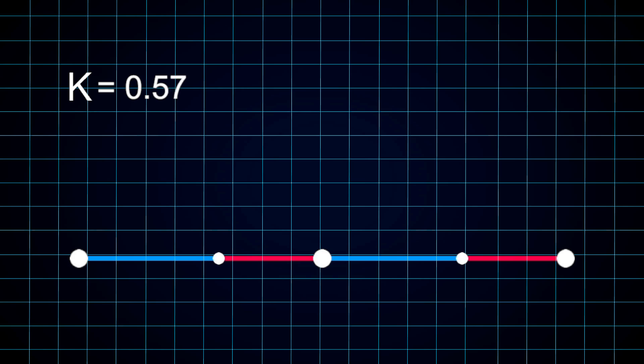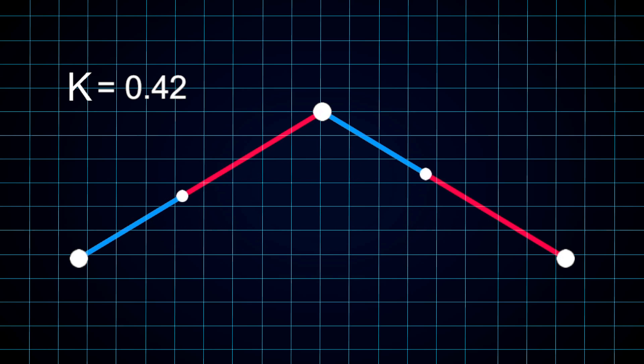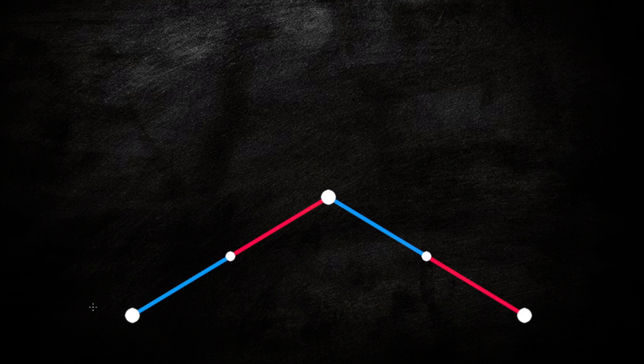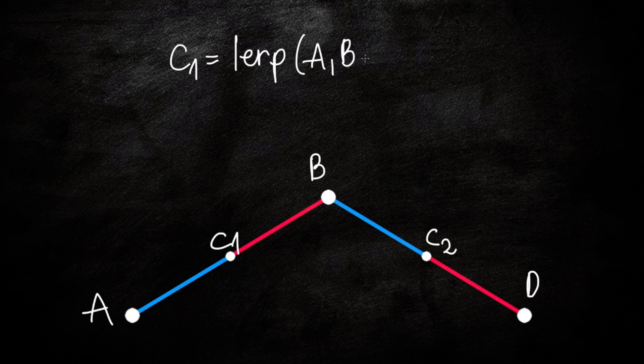The next step is to duplicate this line, giving us two identical lines next to each other. Notice how the middle points of both lines are now positioned based on the same number k. We can now raise the middle point to form this triangular shape. So we still have our points A and B and the middle point C, which we're going to call C1, because we have C2 over here, and the final point we're going to call D. The position of C1 is now lerp between A and B by the value k, and the position of C2 is lerp between B and D by the same value k.